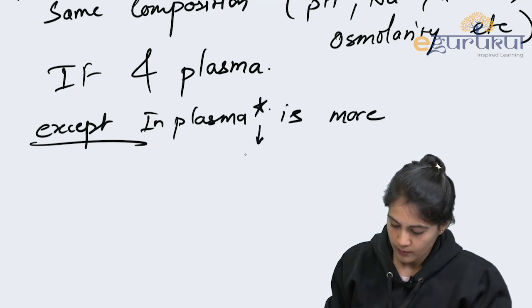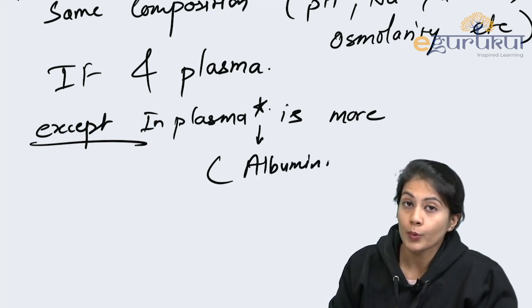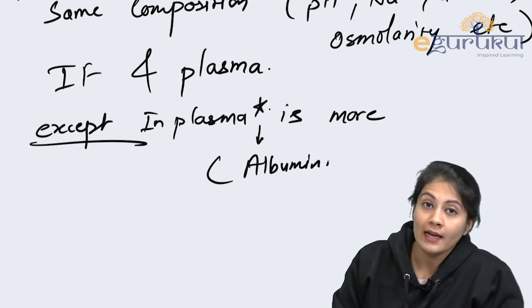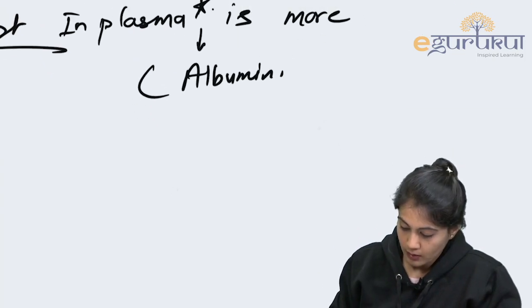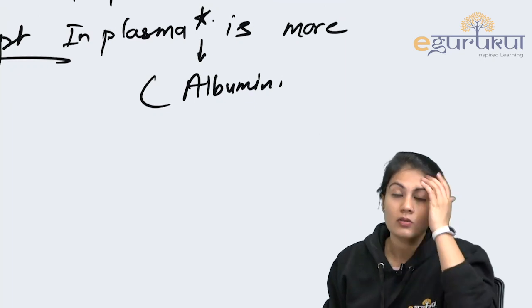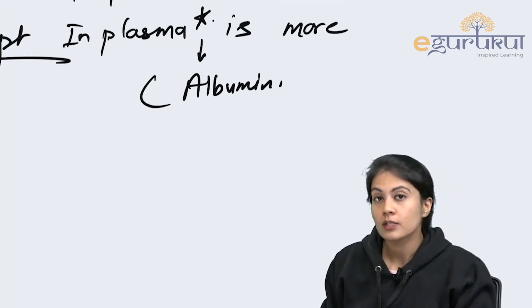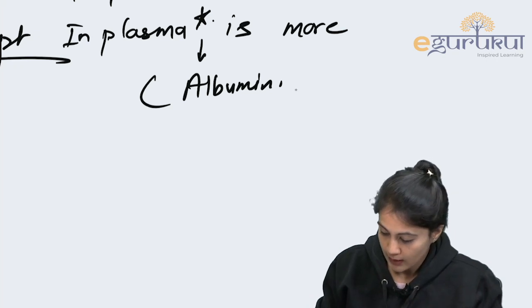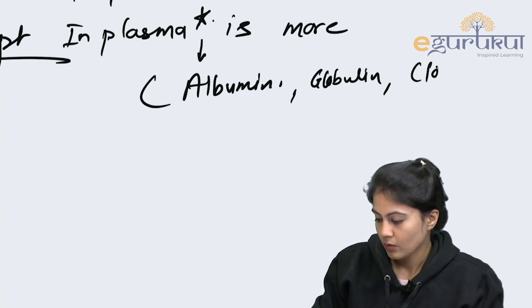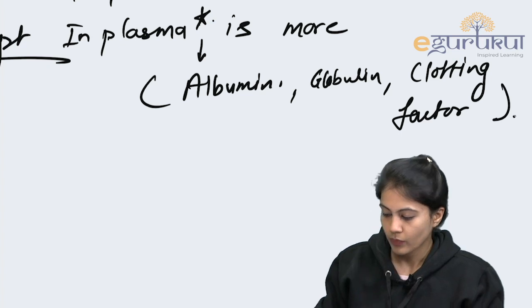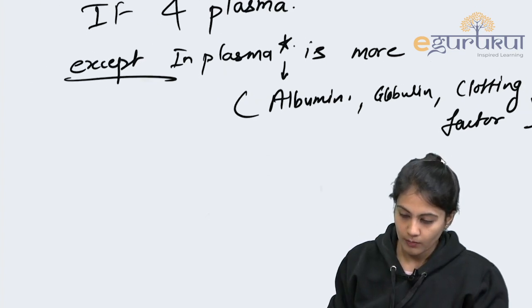What are those few things? Albumin — albumin is a type of protein. The protein going inside the cell is very difficult because the diffusibility is not there; it is not a lipid-soluble substance, so it cannot diffuse inside the cell. So it is more in the plasma. Another protein is globulin, clotting factors, etcetera — some factors are more in the plasma.